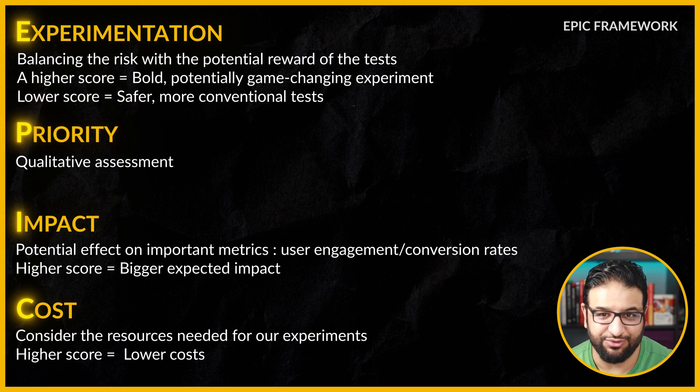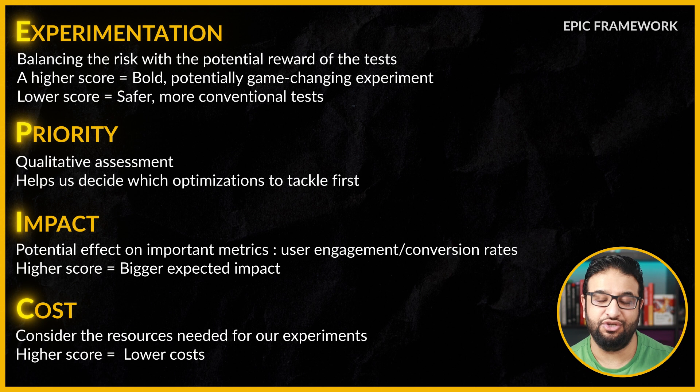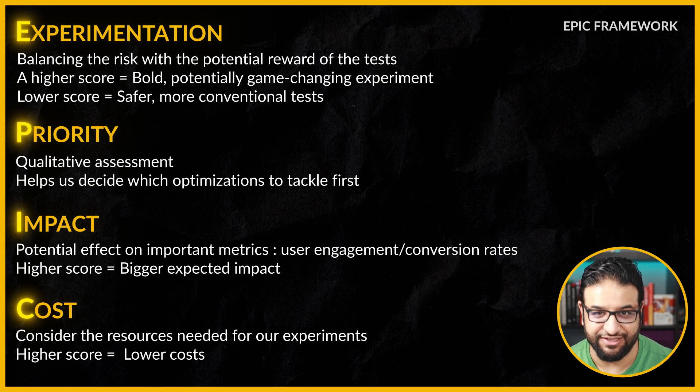And finally, priority. This isn't just a score, but a qualitative assessment that emerges from our other three components. It helps us decide which optimizations to tackle first, ensuring we're always focusing our efforts where they can make the most significant difference. By using the EPIC framework, we're not just throwing spaghetti at the wall to see what sticks — we're making informed, data-driven decisions that balance innovation and practicality. Whether you're tweaking a landing page or overhauling your entire website, EPIC helps you prioritize your actions for maximum efficiency and impact.